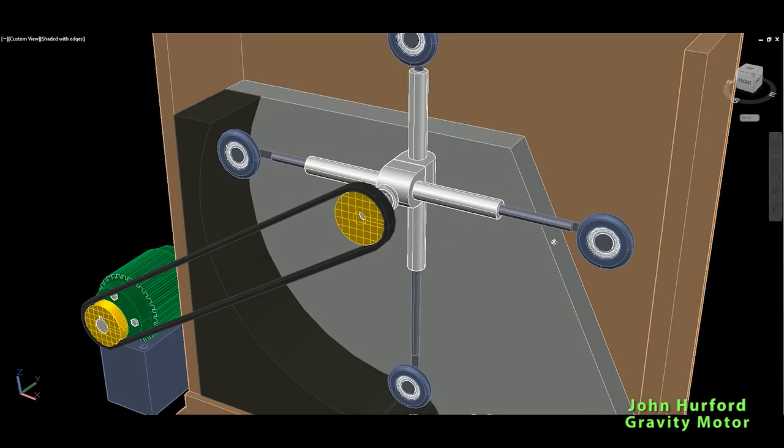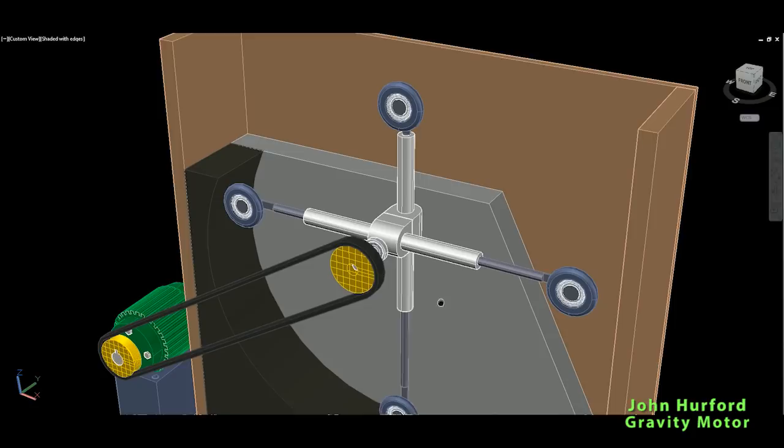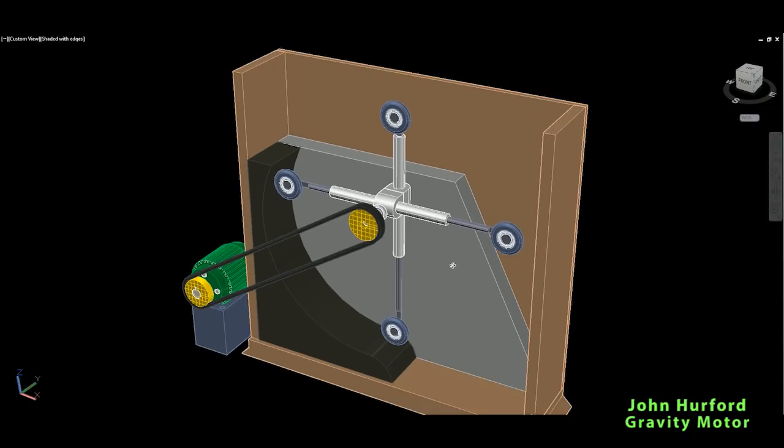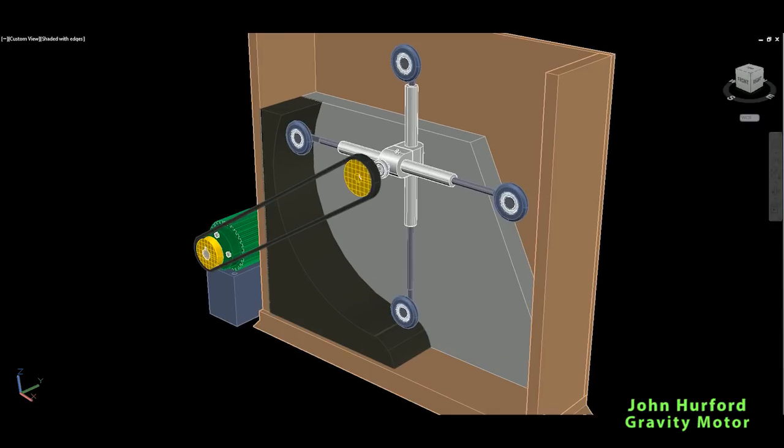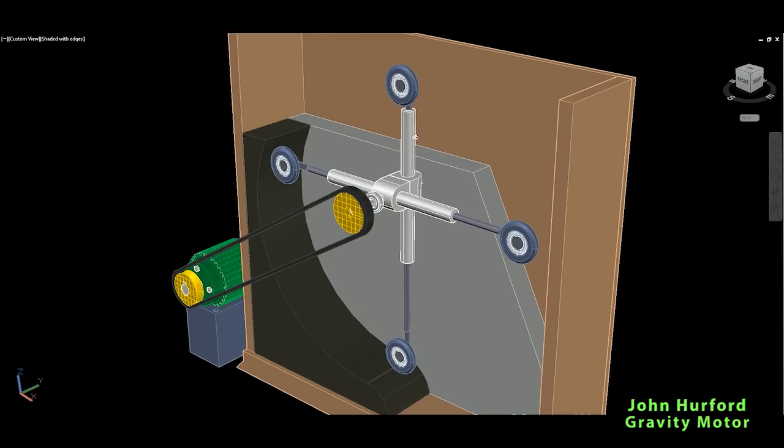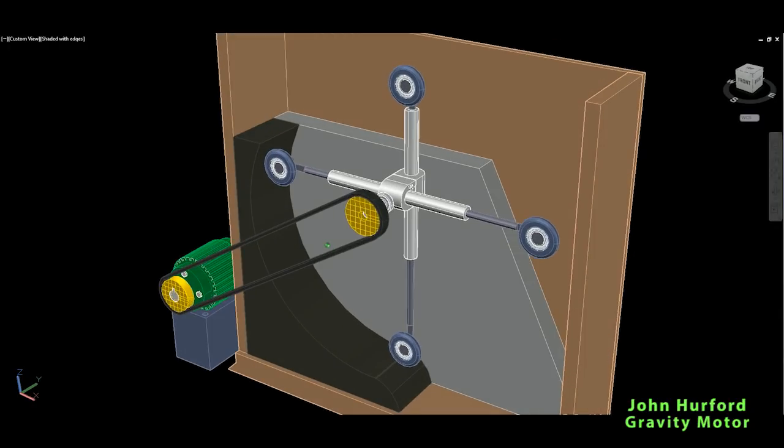Then they start coming towards the center, pulled in, and then this spin continues. Basically this system should give us output energy higher than the input energy or at least to power itself to be a perpetual motion.